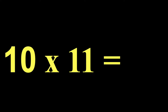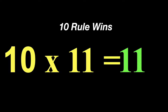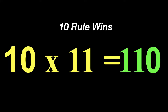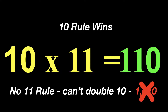10 times 11 is interesting because we have both 10 and 11, but here the 10 rule wins. Remember, the 10 rule is that we take the other number and add a 0. So 10 times 11 is 110. Now, can we use the 11 rule and double? No, we cannot use the 11 rule — you can't double 10. If you doubled 10 it would look like 1,010, and that would be the wrong answer.